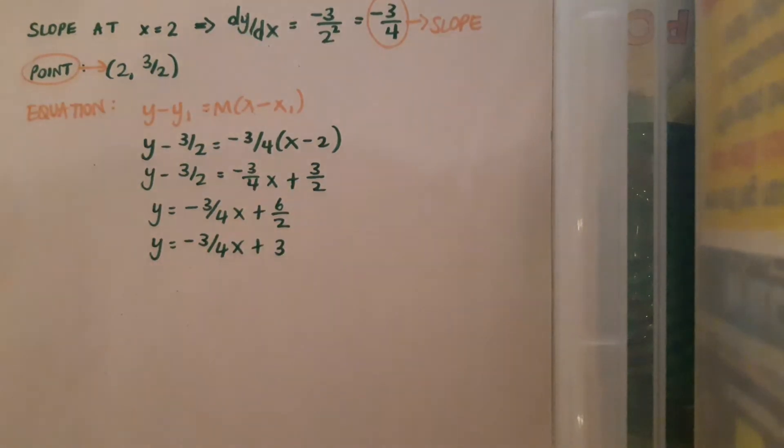So now why was it necessary to get the equation of this line? Well if we go back and look at the question, it tells us that the tangent goes through the x-axis at the point A and the y-axis at the point B, and because I have the equation of the tangent now, I can find those two points.